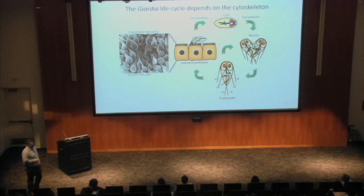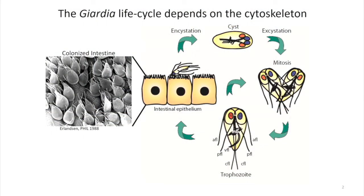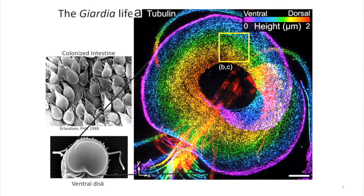One strange thing you notice right away is these parasites have two diploid nuclei. Unlike bacteria that infect cells, these are extracellular parasites — they never invade any tissues. They literally latch onto the intestine, as I'm showing you here. This is a bunch of Giardia parasites in a gerbil intestine. Most of how they attach is attributed to this structure called the ventral disc.